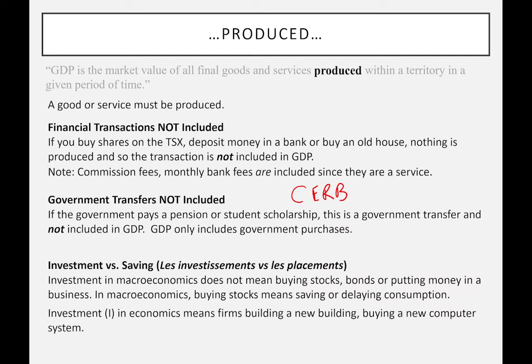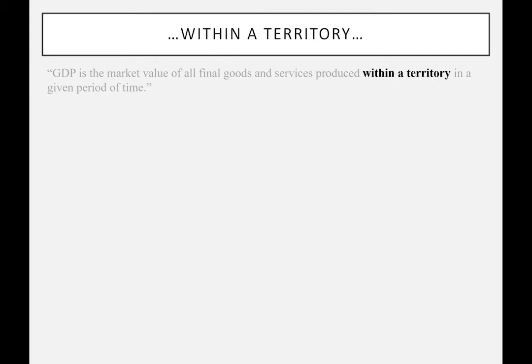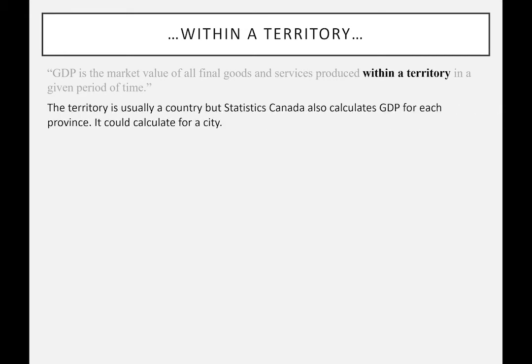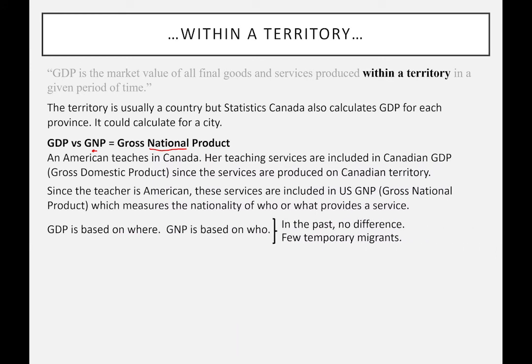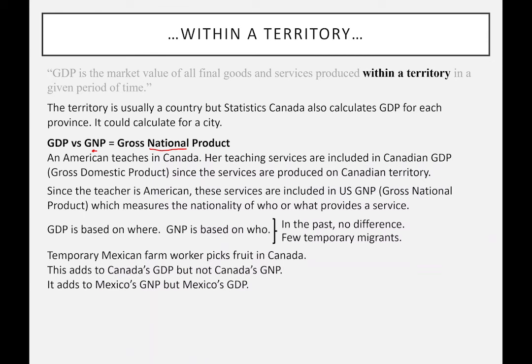Within a territory — that's typically a country, but Statistics Canada also calculates for provinces and even cities. When they first started calculating economic activity, they actually calculated GNP — gross national product — but later revised it to GDP. The difference is that GDP is concerned with where something is produced, while GNP is concerned with who produces it — the nationality of the person.